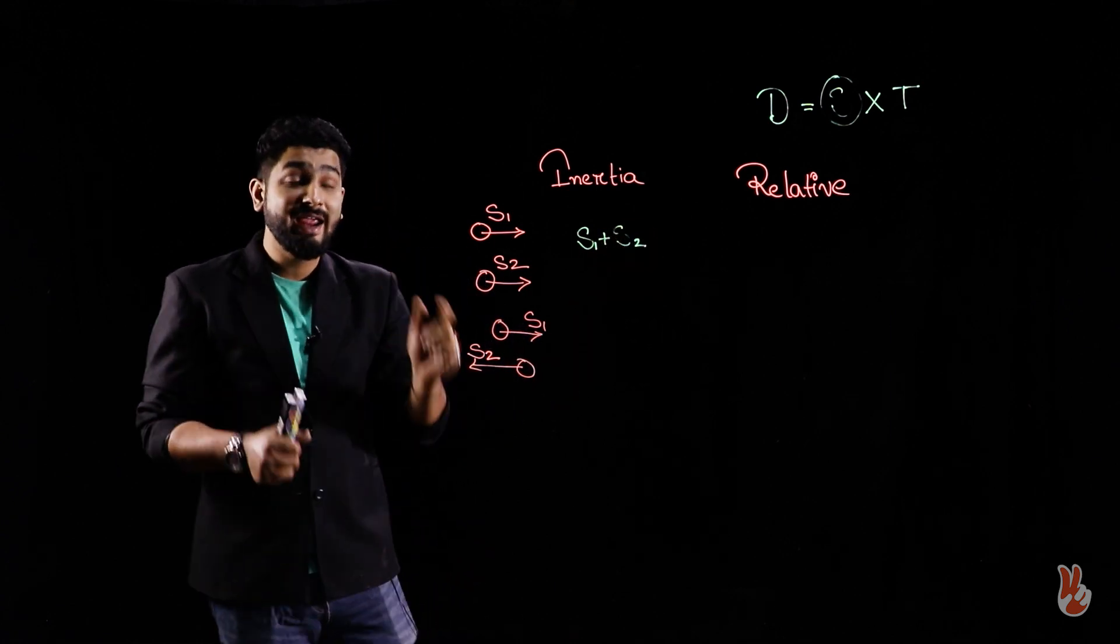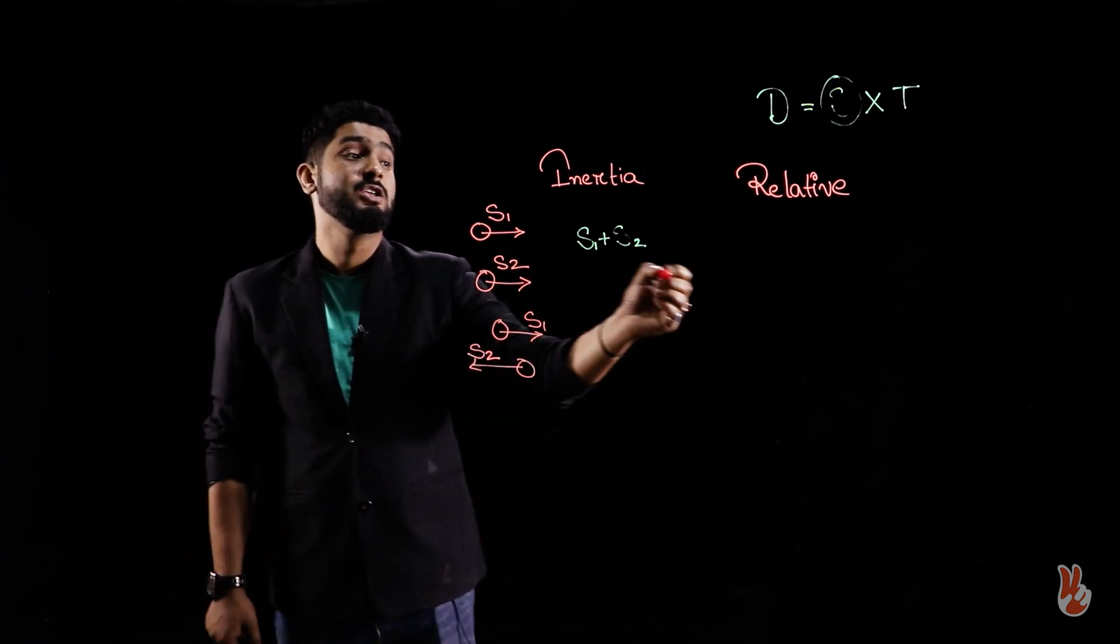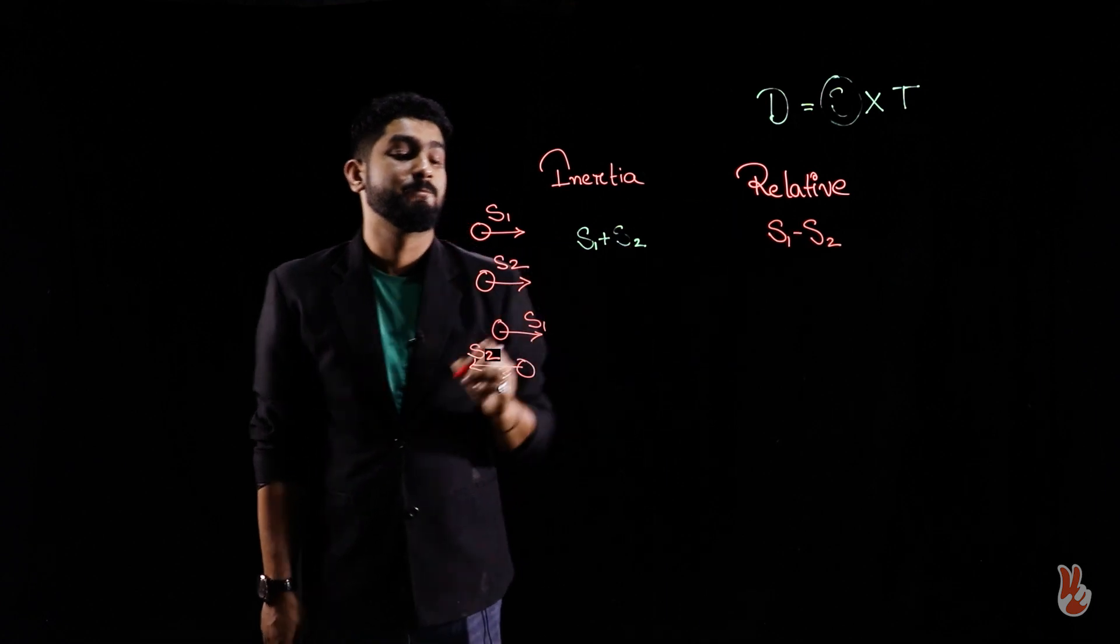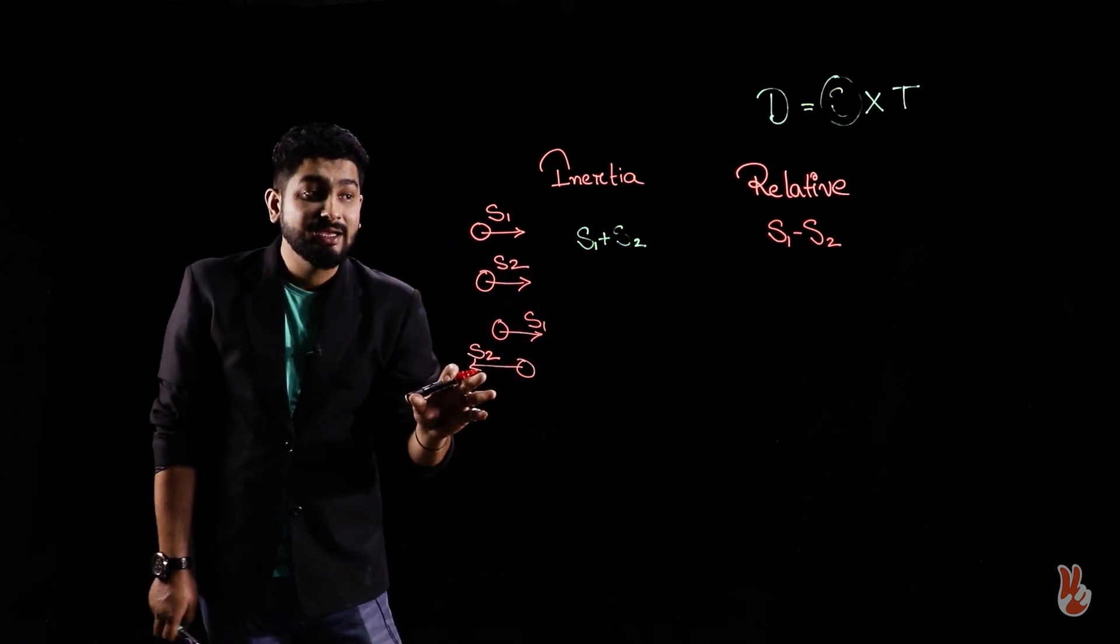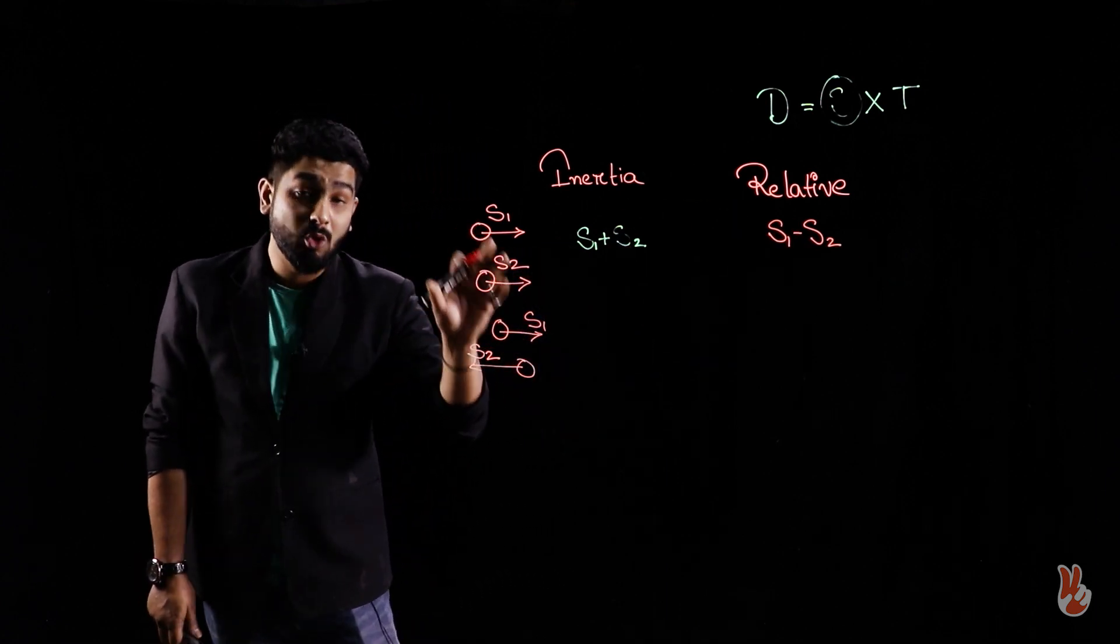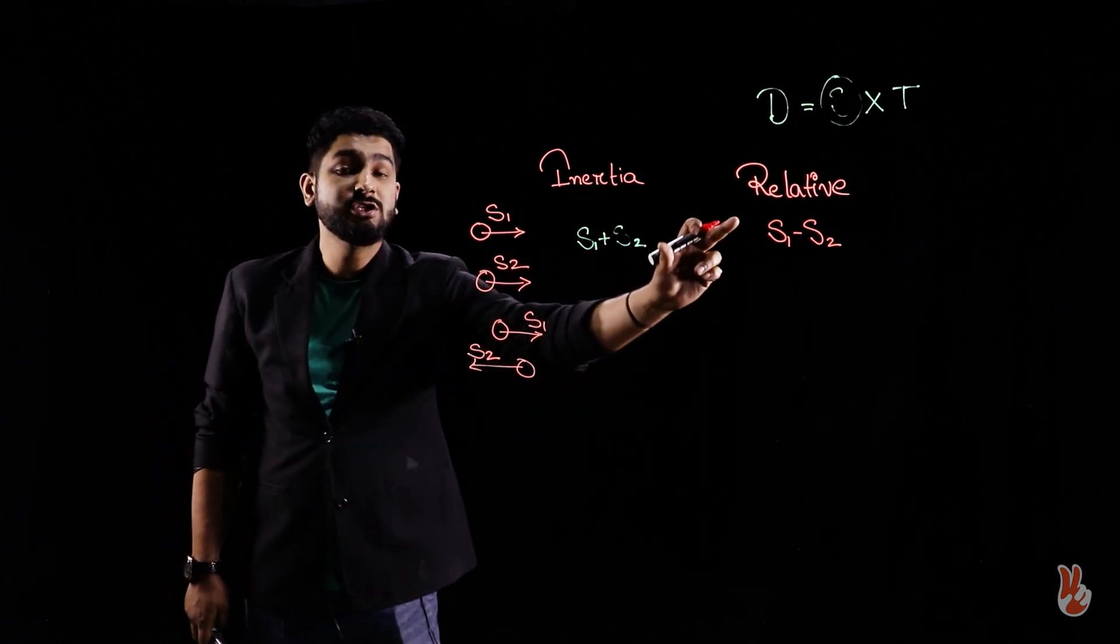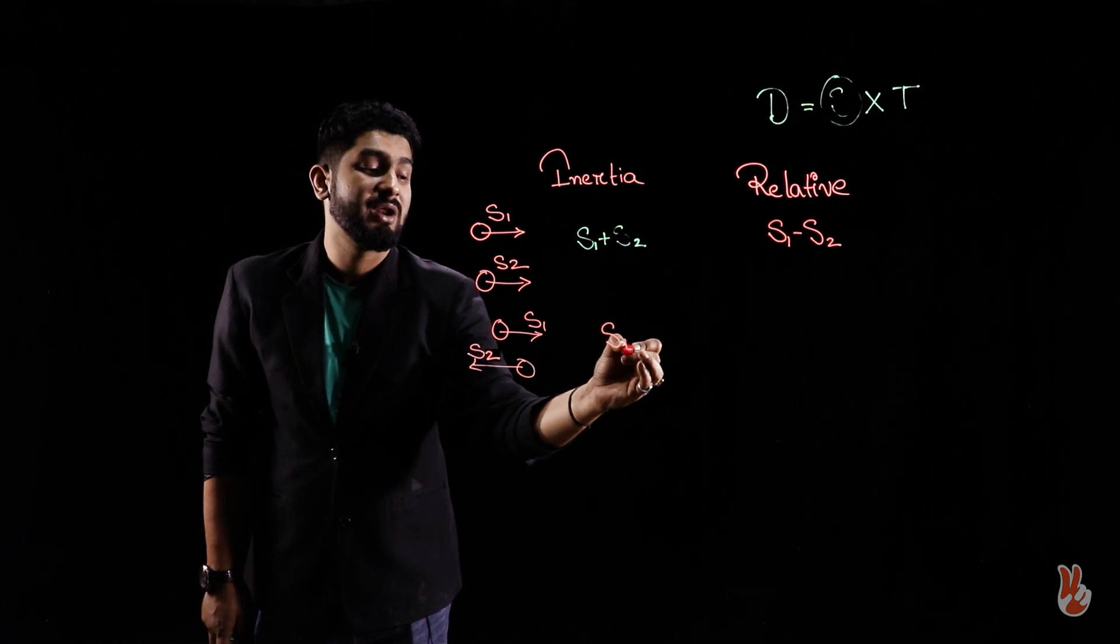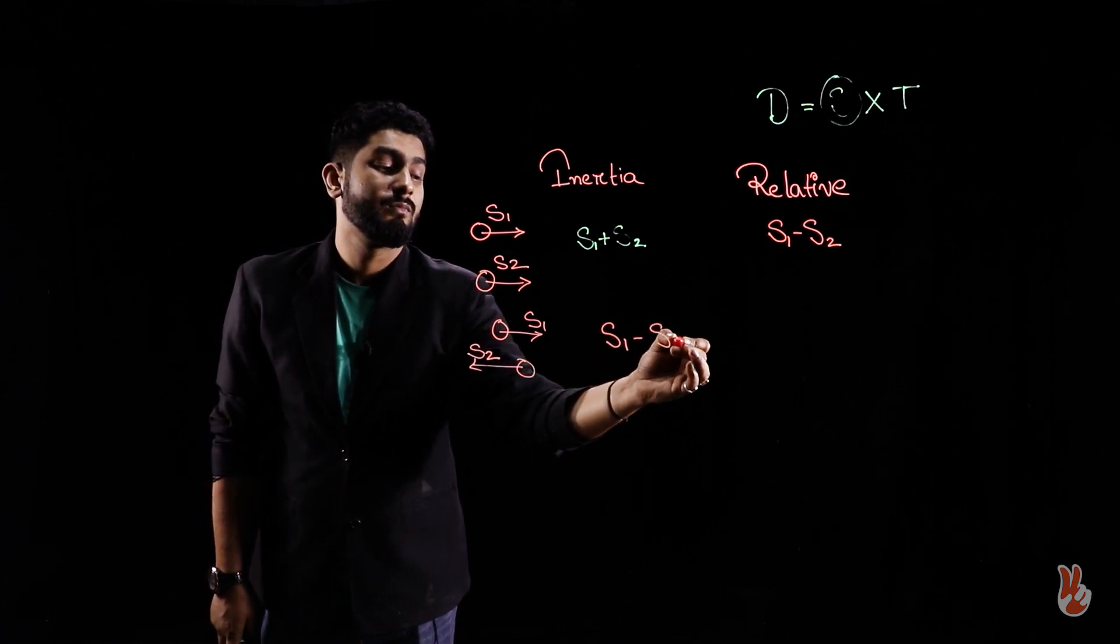When it comes to bodies traveling in opposite direction, these two will flip. Flip in a sense, this will become subtraction and relative will become addition. That's how you can combine speeds.